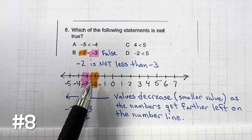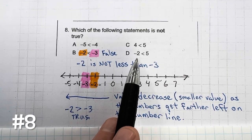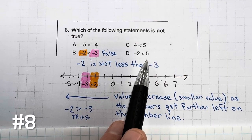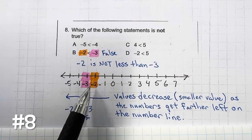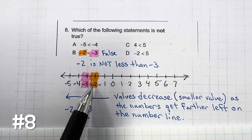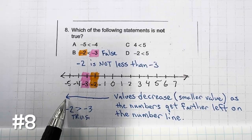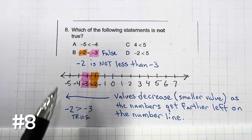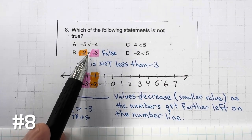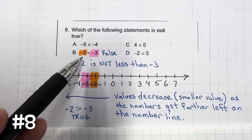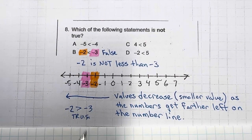Option D states negative 2 is less than negative 3. Here's negative 2 — it's not less than negative 3, because the farther left you go, the smaller the values. So negative 3 is less than negative 2, not the other way around. In order to make it true, it would be: negative 2 is greater than negative 3.